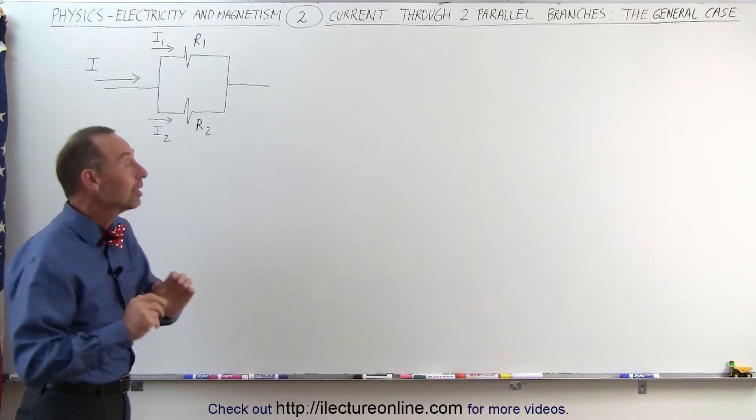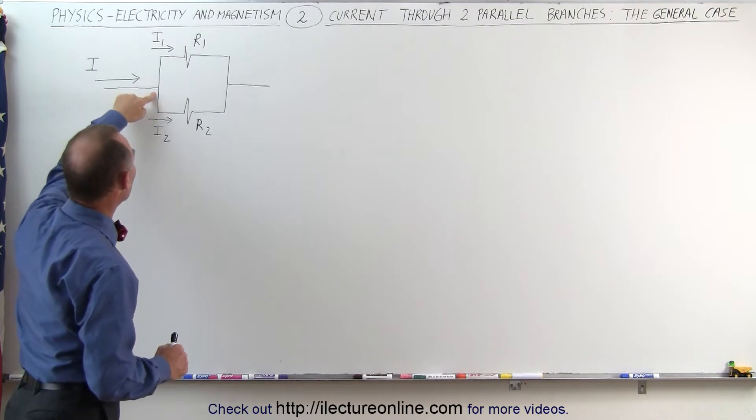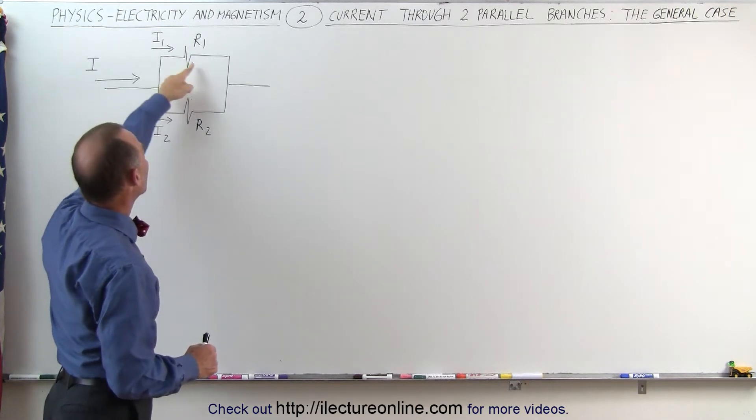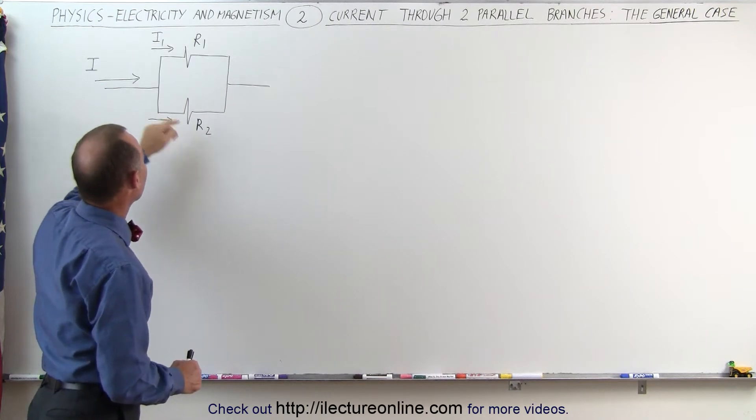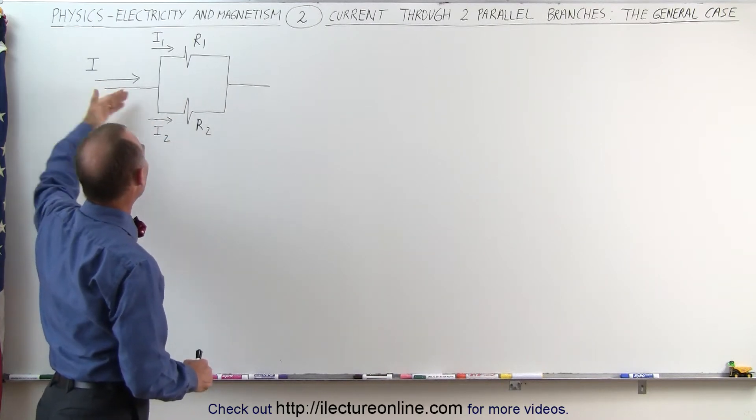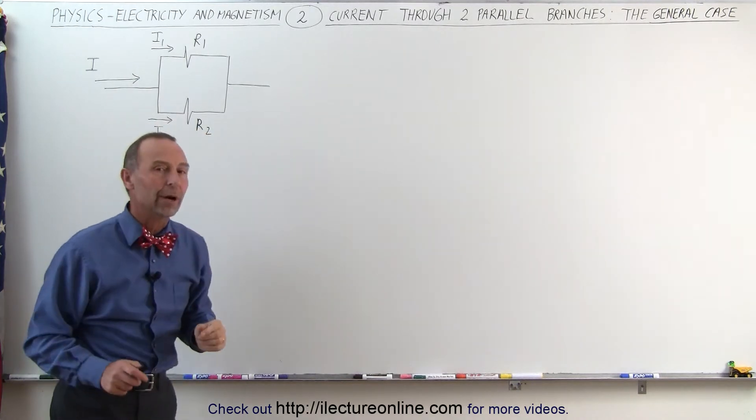In other words, we're not going to use any numbers. We have the current I entering the branch point. We have in the top branch resistor R1 and the bottom branch resistor R2. And thus, the current will divide into I1 through the top branch and I2 through the bottom branch.